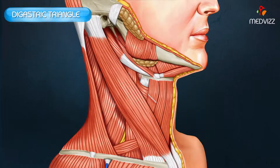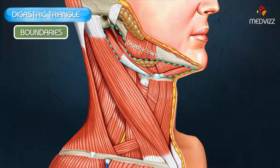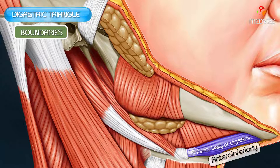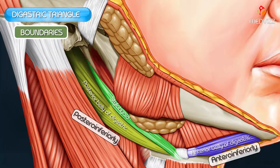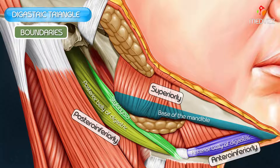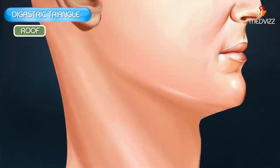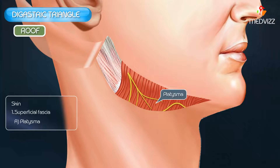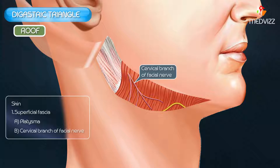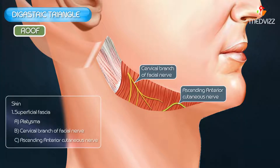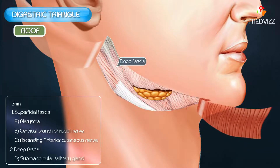Next is the digastric triangle. Its boundaries are: antero-inferiorly by the anterior belly of the digastric, postero-inferiorly by the posterior belly of the digastric and the stylohyoid muscle, and superiorly (the base) by the base of the mandible and the line joining the angle of the mandible to the mastoid process. The roof is formed by skin, superficial fascia containing platysma, the cervical branch of the facial nerve, the ascending branch of the transverse cutaneous nerve of the neck, and deep fascia which splits to enclose the submandibular salivary gland.